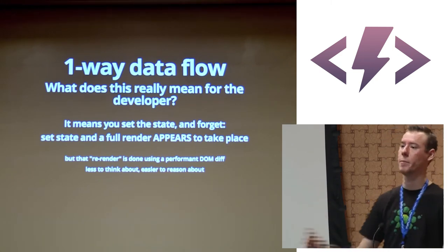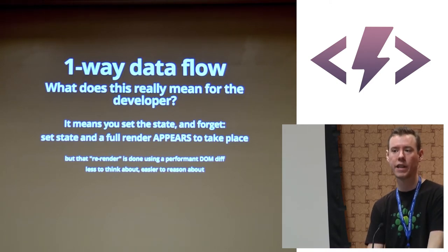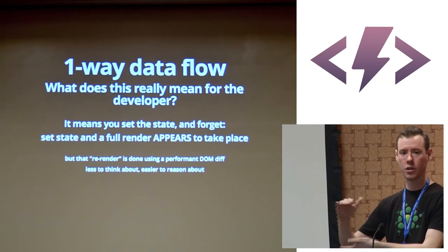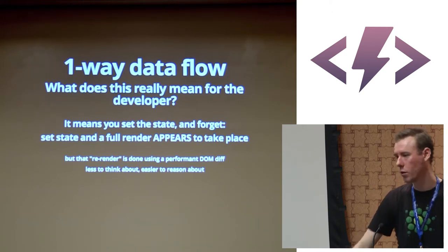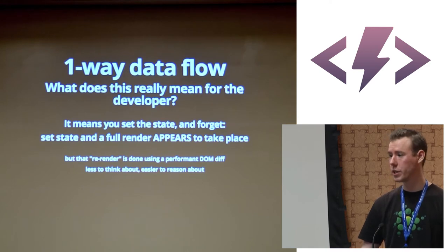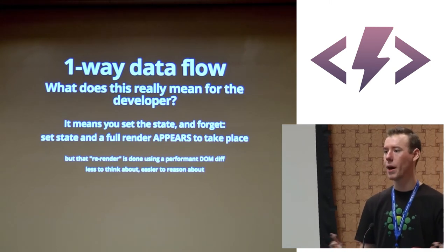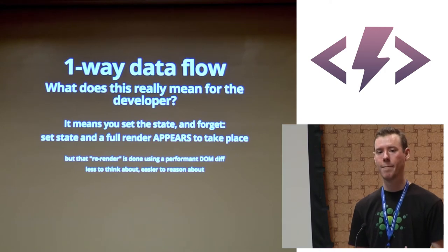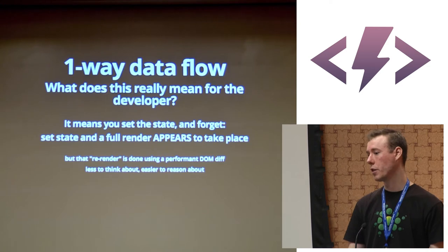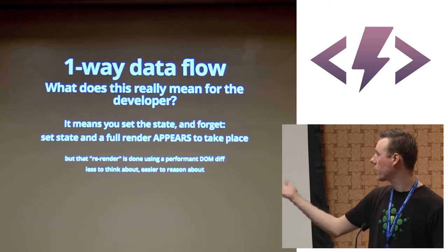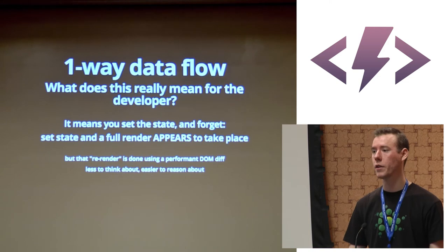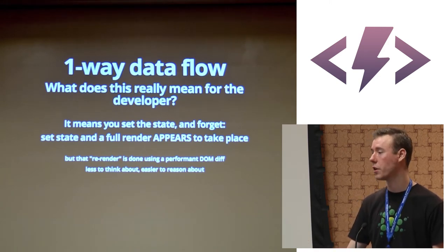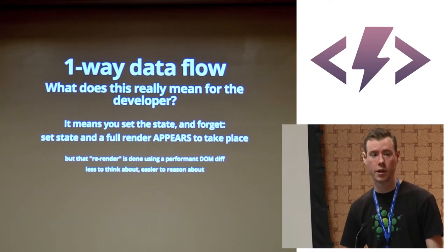That full re-render didn't actually happen — the virtual DOM intelligently figures out what changed, diffs just what updated, and applies that to the DOM tree. If I change something in my state within the view, it's as if I had completely re-rendered, done a complete page reload. I'm not thinking about two-way binding at all — I just fire that state change, and the view automatically updates, really performantly.